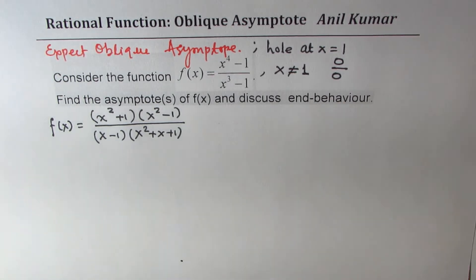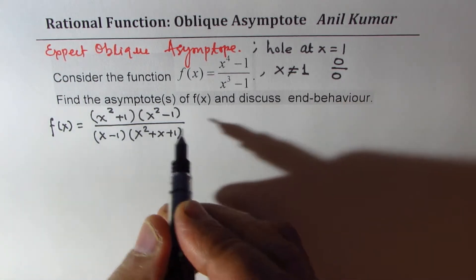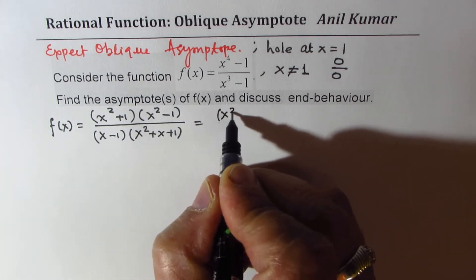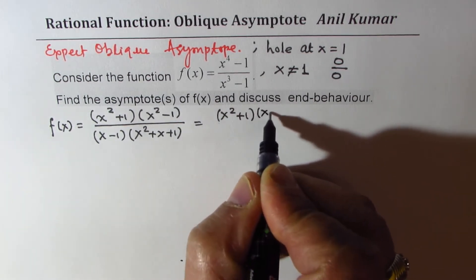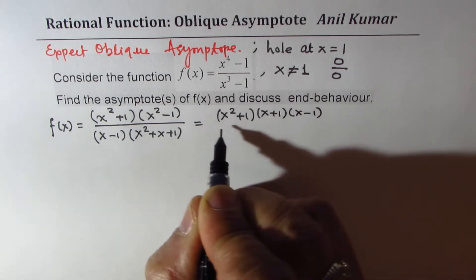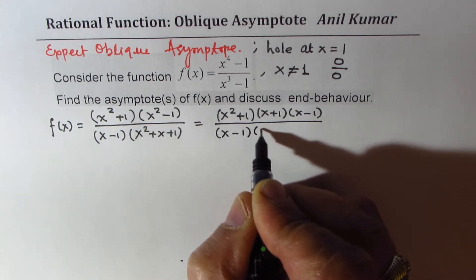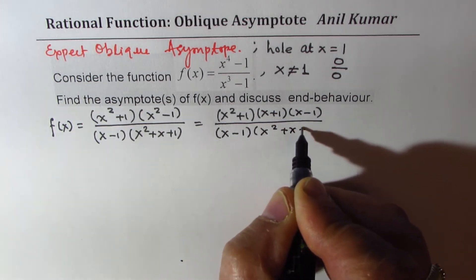So once you do that, I have to further factor. So let me factor this also. We have x squared plus 1 times x plus 1 times x minus 1 divided by x minus 1 times x squared plus x plus 1.